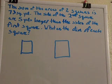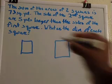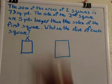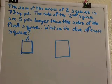And let's let the side of the smaller square be represented by x. And let's let the side of the larger square be represented by x plus five.